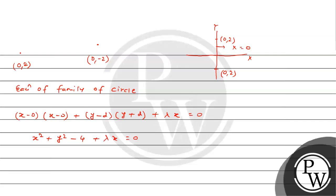Differential equation ke liye hameh diya hua equation differentiate karna hoga aur is lambda ko independent karna hoga — lambda would be free from the equation. Iske liye differentiate karte hain: x² becomes 2x, y² becomes 2y(dy/dx) + λ = 0. And lambda becomes: λ = -2(x + y·y'). This is the value of our lambda.